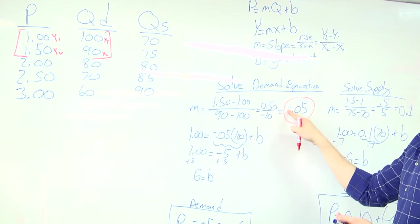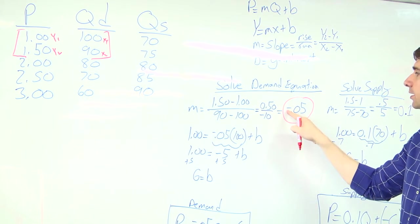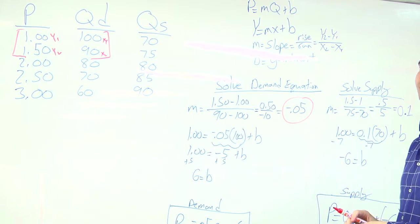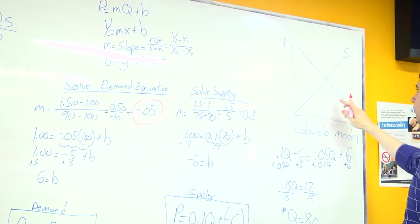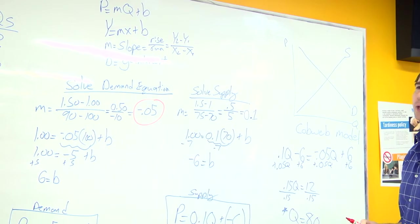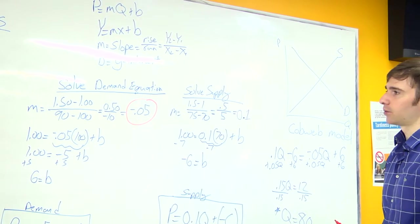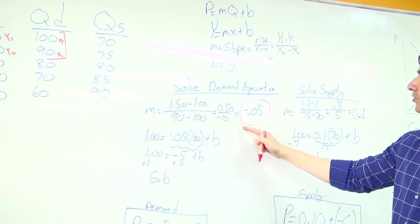See how my slope is a negative sign? Demand is a downward sloping line. Our demand is downward sloping, so it'll always be a negative so long as our demand is downward sloping.